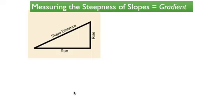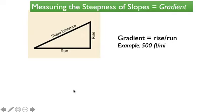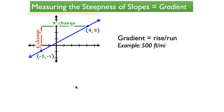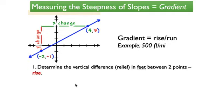Contour lines allow for the steepness of slopes to be calculated. Knowing the steepness, also called the gradient, can be helpful when planning development of the landscape, such as homes or roads. They can also help Earth scientists make important interpretations and predictions about the geologic conditions of the landscape. You might recall solving rise over run problems in math class — this same logic is used to calculate gradient, as summarized in these steps.